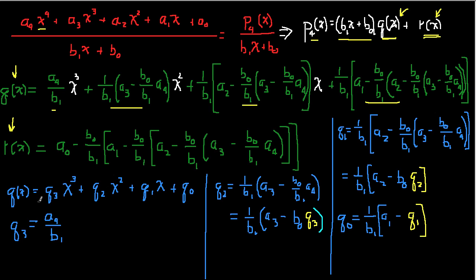I'm writing q(x) as a third-order polynomial because we have a fourth-order polynomial divided by a first-order polynomial — the quotient degree is four minus one, which is three. So q(x) = q₃x³ + q₂x² + q₁x + q₀, and q₃ = a₄/b₁.